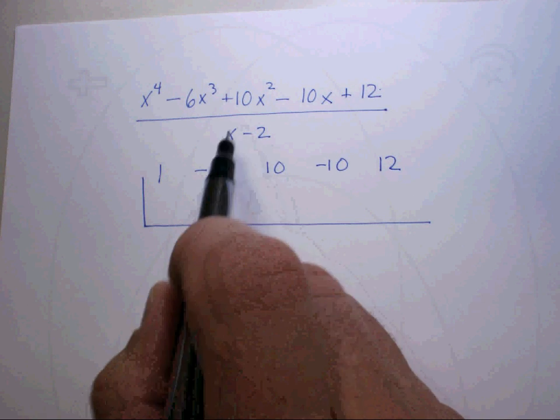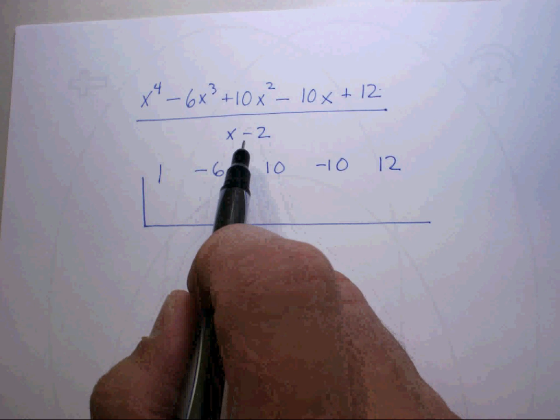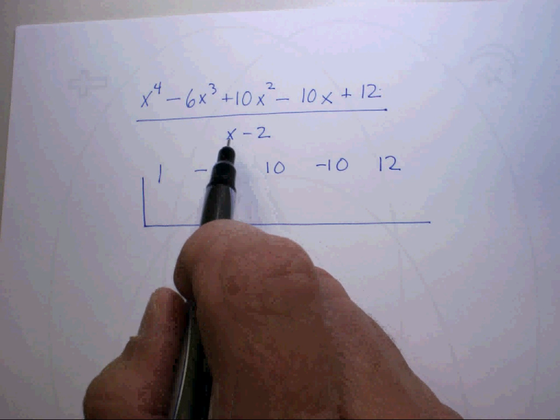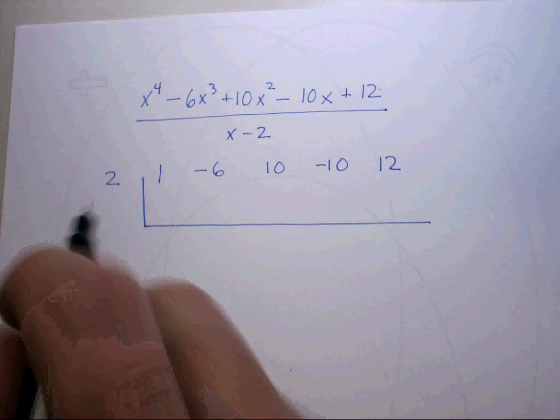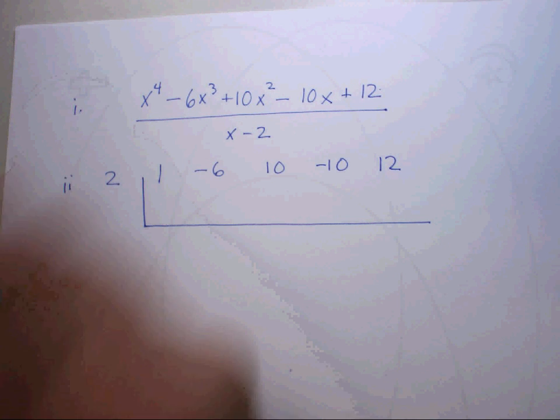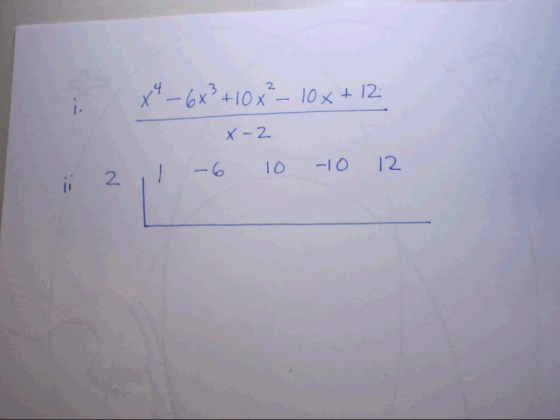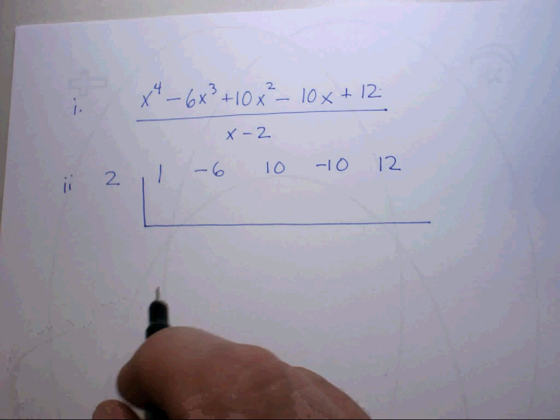Then you go to the divisor and ask yourself, what will make this equal to zero? In this case, the answer would be 2, and you put the 2 out there. I'm just going to keep these separated in steps. Now that you've done your setup, you can go ahead and start your synthetic division.